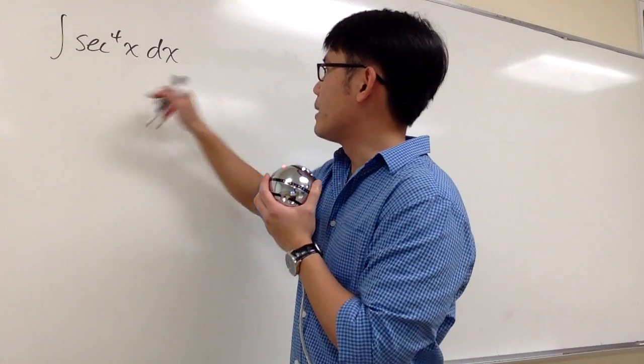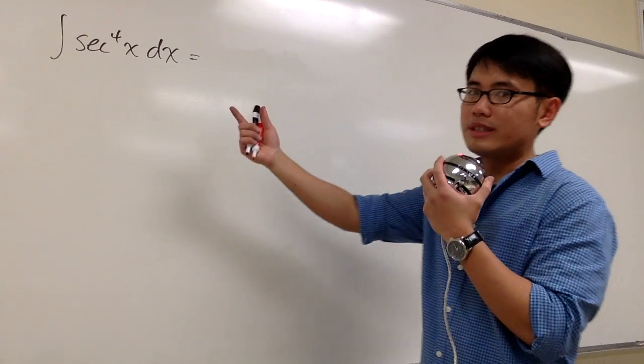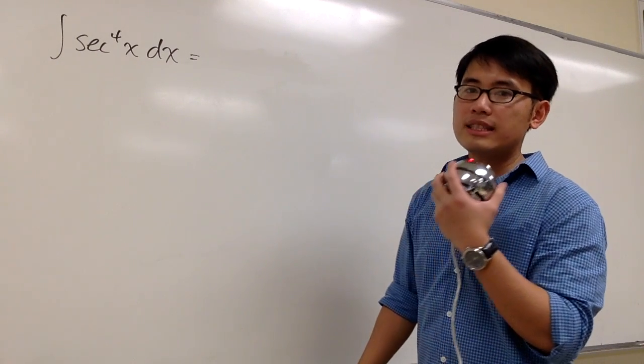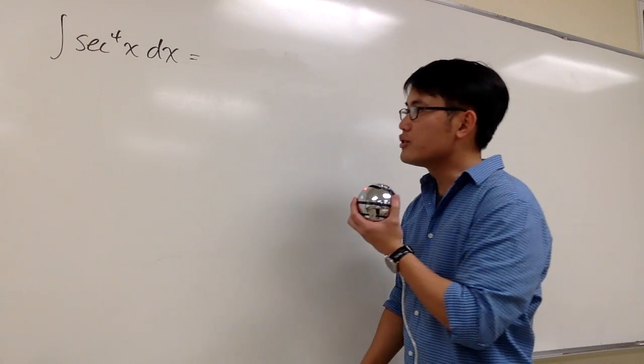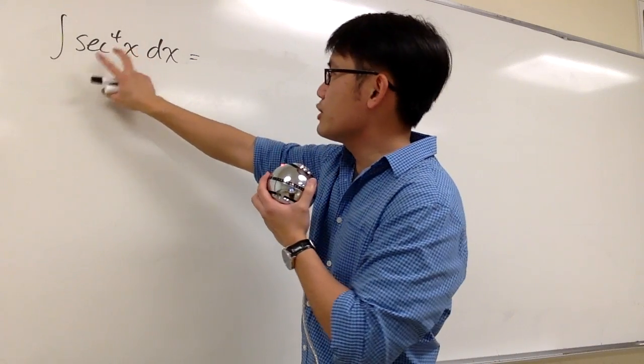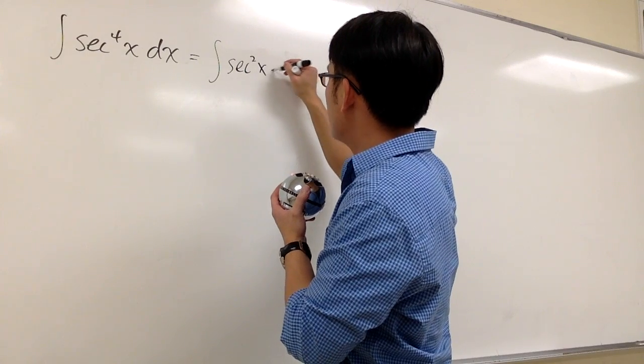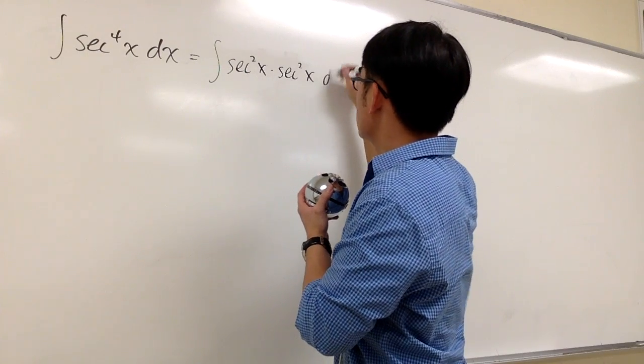So here we have secant to the fourth power, and as I mentioned in the previous video, whenever you are dealing with a high power of trig functions, let's just break it apart. In such a situation, we would like to keep even powers. So let's split it apart as the integral of secant squared x times secant squared x.